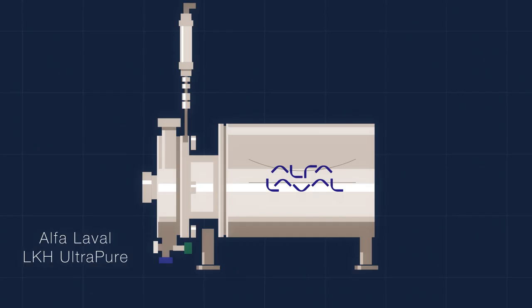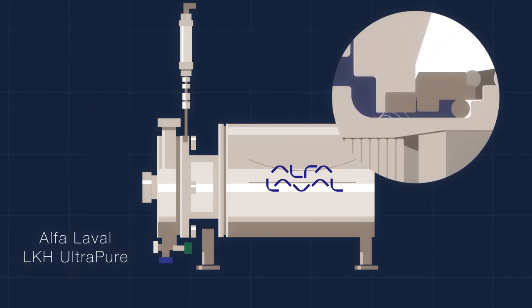With the Alfa Laval LKH Ultrapure, its external shaft seal ensures your product stays contamination-free, while the high flow in the smallest of corners secures product integrity.